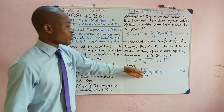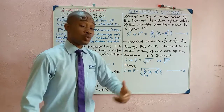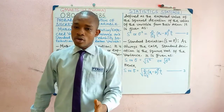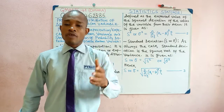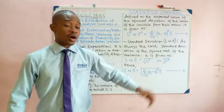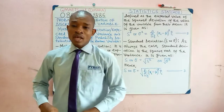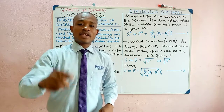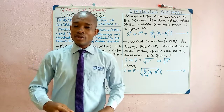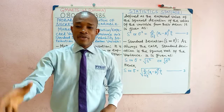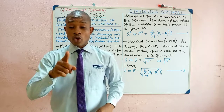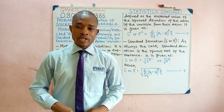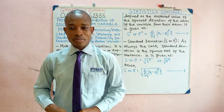Finally, we talk about standard deviation, which as always is the square root of the variance. You have the equation here on the board. In the next video, we are going to calculate the expected value, the variance, and standard deviation for the case of a coin that was thrown three times.